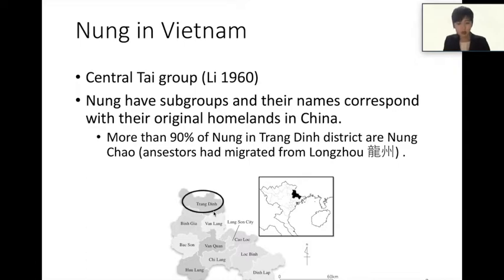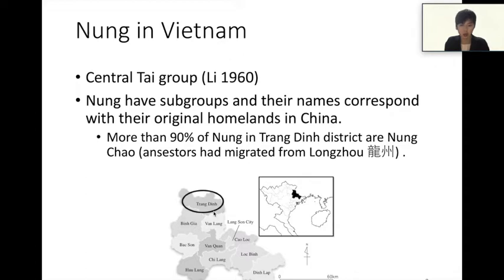The NUN language belongs to the central Thai group of Thai languages. The NUN people have subgroups, and their names correspond with their original homelands in China. More than 90% of NUN in Chanding District are NUN Chao, whose ancestors had migrated from NUN Chao in China.